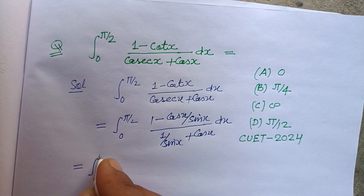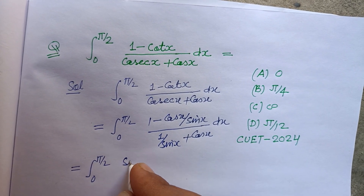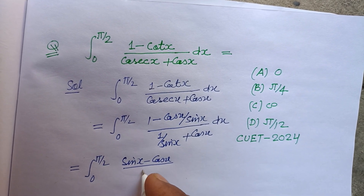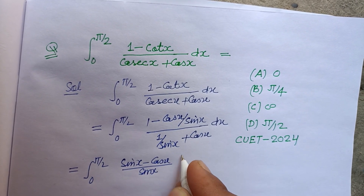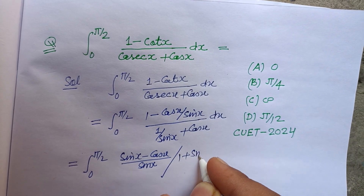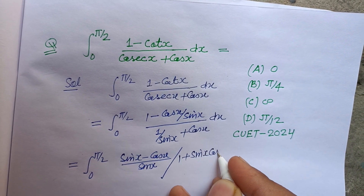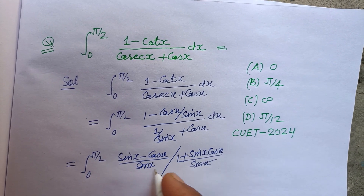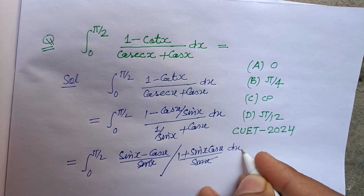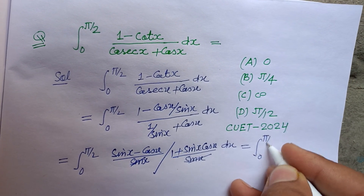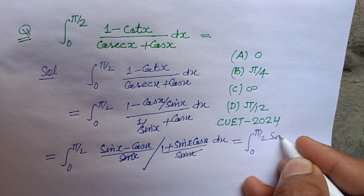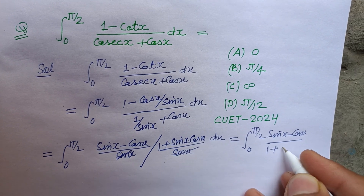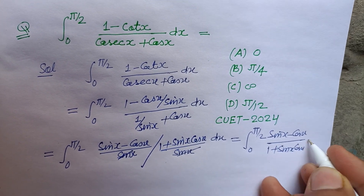This becomes (sin x - cos x) / sin x, over (1 + sin x · cos x / sin x). The sin x terms cancel, giving us the integral from 0 to π/2 of (sin x - cos x) / (1 + sin x cos x) dx.